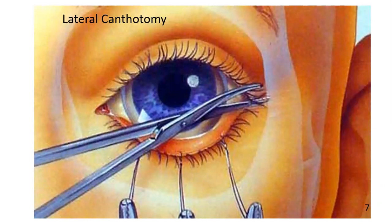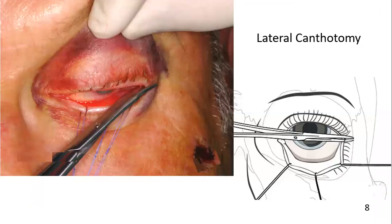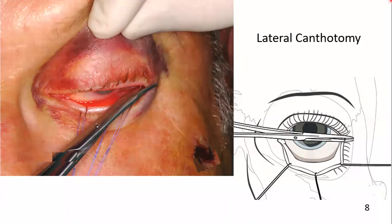A pointed scissor is inserted horizontally into the outer lid angle laterally so that the instrument is in contact with the bone — approximately 10 mm contact with the underlying bone of the lateral orbital rim. The lateral palpebral fissure is cut horizontally, including the skin, orbicularis oculi muscle, and the conjunctiva. The superficial fanning fibres of the lateral canthal tendon are also transected.